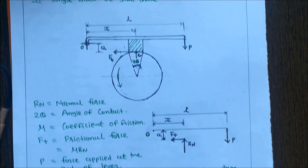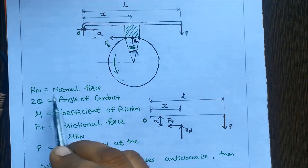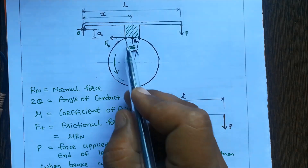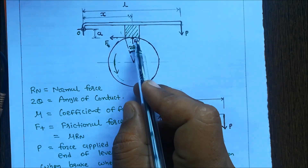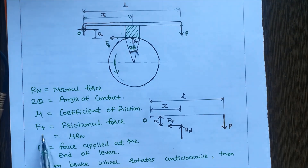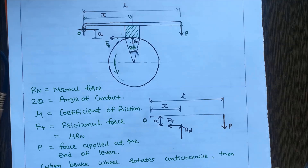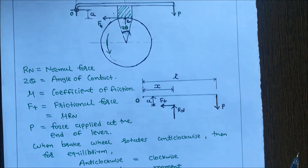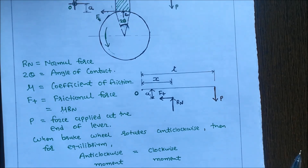In this figure: Rn is the normal force; 2θ is the angle of contact; μ is the coefficient of friction; Ft is the frictional force (or tangential force), whose value is given by Ft = μ·Rn; and P is the force applied at the end of the lever.